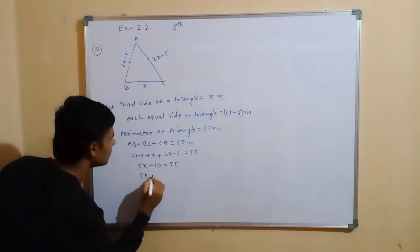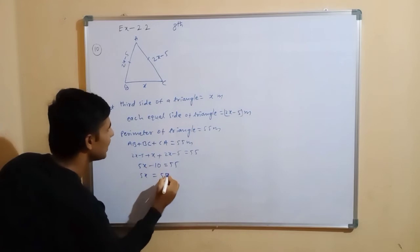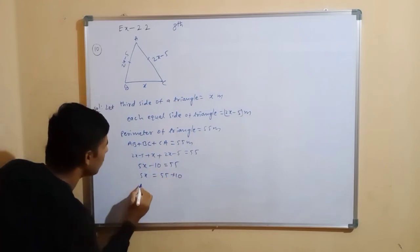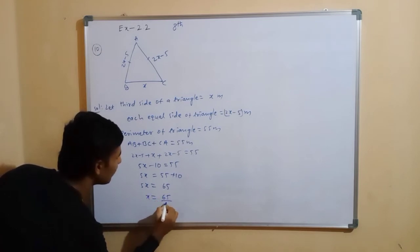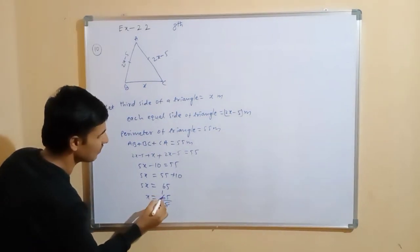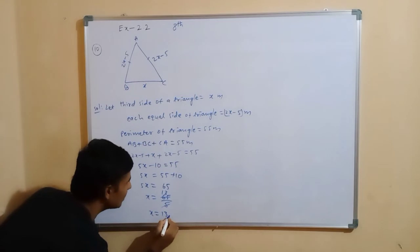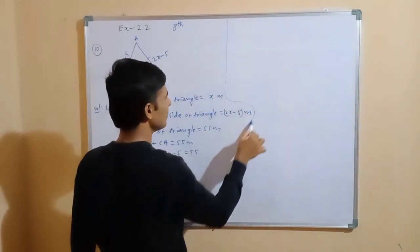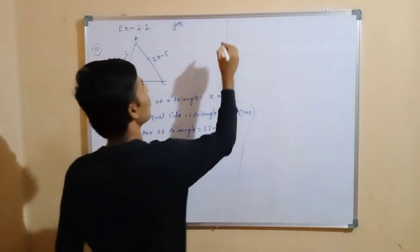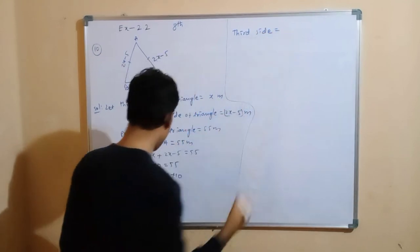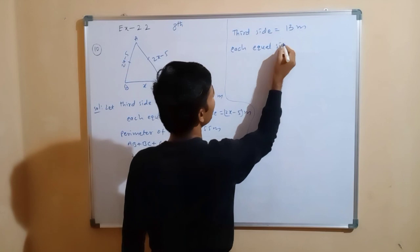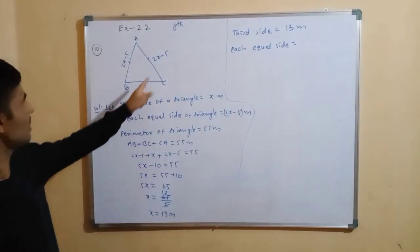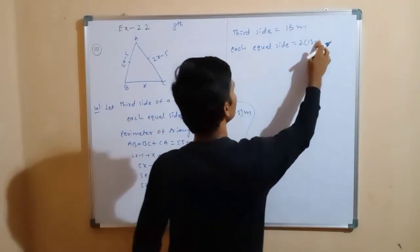Now, transposing minus 10 to the other side: 5x equals 55 plus 10, which is 65. So x equals 65 divided by 5, which gives x equals 13 meters. Therefore, the third side equals 13 meters, and each equal side equals 2x minus 5 — substituting 13 gives 2 times 13 minus 5, which we calculate next.